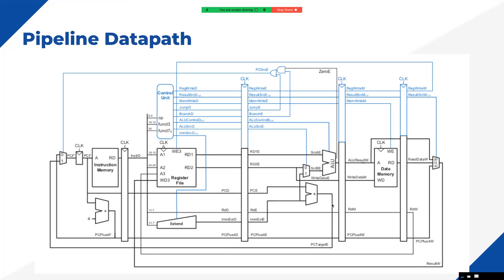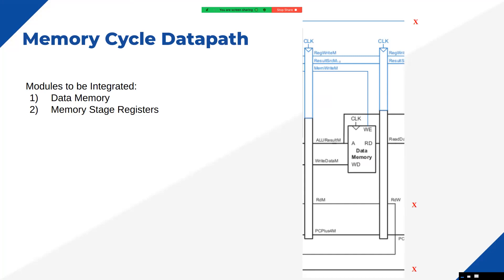Today we are going to design our memory stage, which is the fourth stage of our pipeline. The memory cycle datapath is very simple - it only contains a data memory and memory stage registers. There are 27 signals declared as outputs of the execute cycle acting as inputs here. Three signals will be utilized in this stage, and four signals will be forwarded directly without changes. A new read data signal will go towards the write back stage.